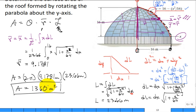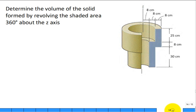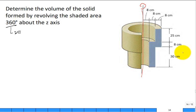Revolving a line generates an area; revolving an area generates a volume. New problem: determine the volume of the solid formed by revolving the shaded area 360 degrees about the Z-axis. The shaded area can be broken into two segments — a minimum of two pieces.